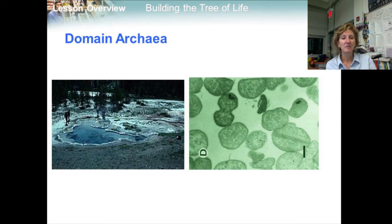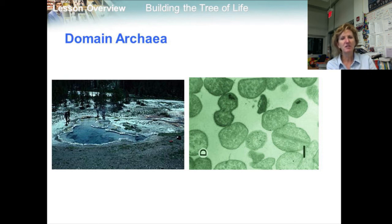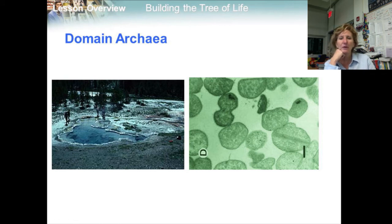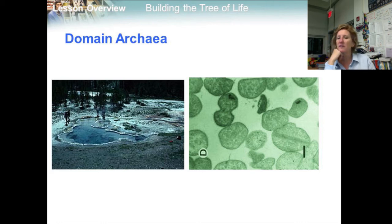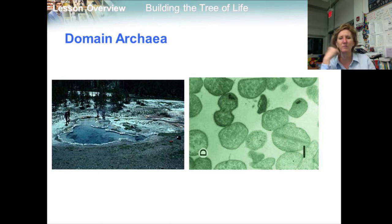Domain Archaea corresponds to the kingdom Archaeabacteria. Members of the domain Archaea are unicellular and prokaryotic. They live in some extreme environments, like volcanic hot springs, brine pools — very salty pools of water — and black organic mud totally devoid of oxygen. Many of these bacteria can survive only in the absence of oxygen. Their cell walls lack peptidoglycan, and their cell membranes contain unusual lipids not found in any other organisms.